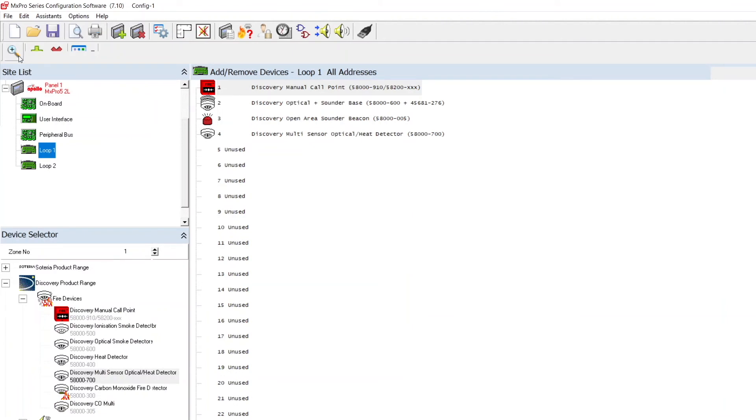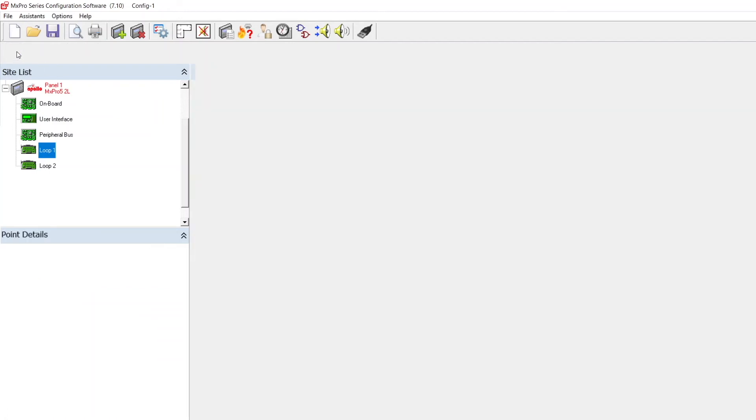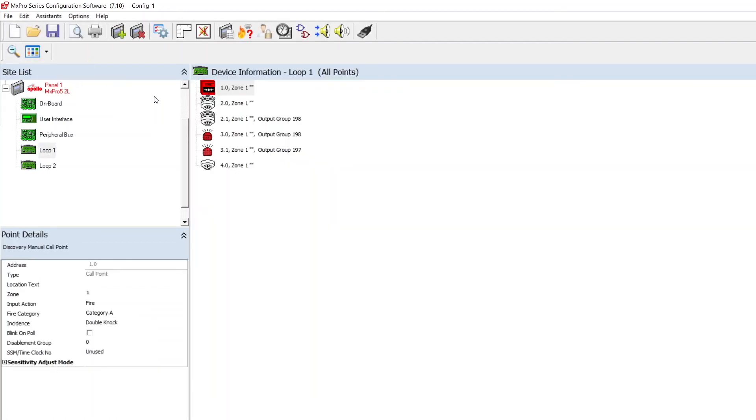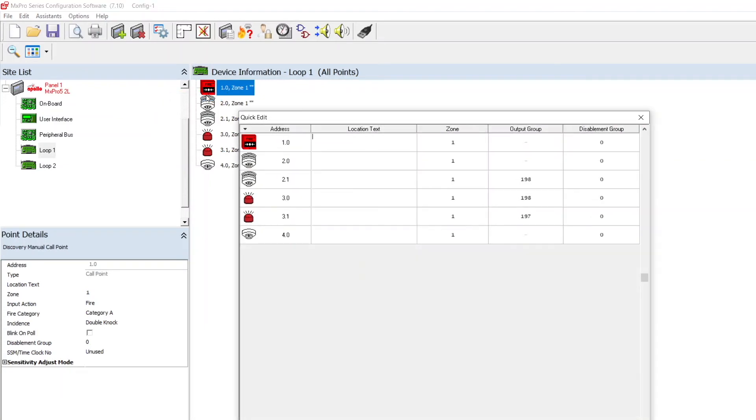Press the magnifying glass above site list to show the device information. Right clicking on a device will show the operation for quick edit. This will bring up a simplified list of devices and on the right there is a column for disablement group. Multiple disablement groups can be created by assigning devices into different group numbers.